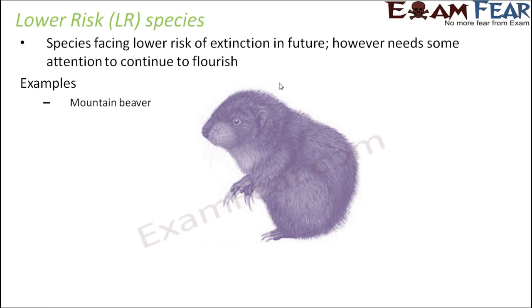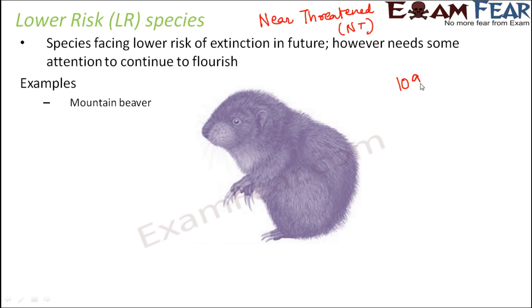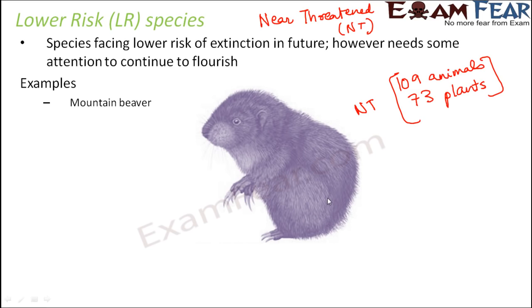Lower risk species face a lower risk of extinction in the future but still need some attention to continue to flourish. Their risk of extinction is comparatively lesser than critically endangered, endangered, or even vulnerable species. Lower risk species are also called near threatened, abbreviated NT. In India, around 109 animals and 73 plant species are near threatened. One example is the mountain beaver, shown on screen, which is a lower risk species.